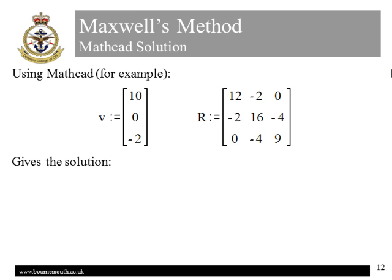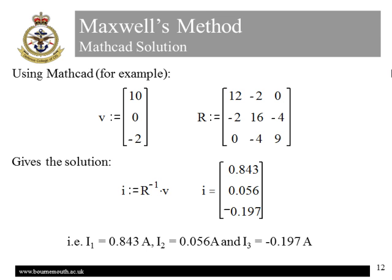We can do the same to enter our matrix of resistances. The Mathcad solution then is given by I equals R to the minus 1 times V, where R to the minus 1 is a matrix inverse, which Mathcad performs to give the solutions shown on the slide. I1, a circulating current of 843 mA, I2, 56 mA, and I3, a current of minus 197 mA, or alternatively, a current of plus 197 mA, flowing in an anti-clockwise direction.